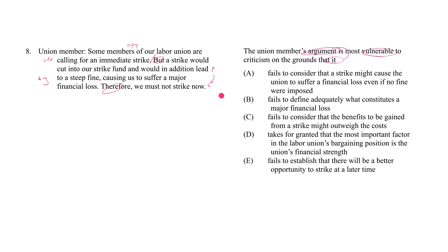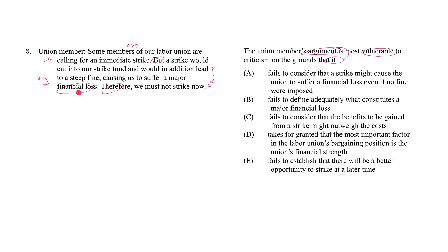This is pretty common in these high-level questions — method of reasoning, flaw questions. They don't try very hard to hide the conclusion because they know the difficulty resides in the reasoning. The union member says a strike would cut into our strike fund — to have a strike, you've got to spend money — and in addition would lead to a steep fine. So both of these things would cause the union to suffer major financial loss, which is the reason given for 'we must not strike now.'